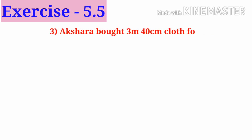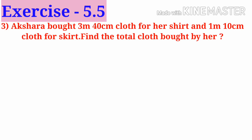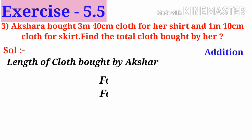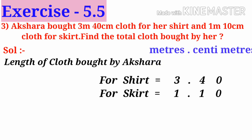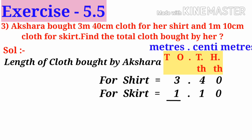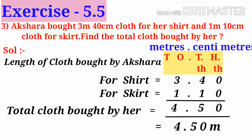Now third problem. Akshara bought 3 meters 40 centimeters of cloth for her shirt and 1 meter 10 centimeters of cloth for her skirt. Find the total cloth bought by her. The word 'total' indicates addition. Length for shirt is 3.40 meters and for skirt is 1.10 meters. Adding: 0 plus 0 is 0, 4 plus 1 is 5, and 3 plus 1 is 4. Total cloth bought is 4.50 meters.